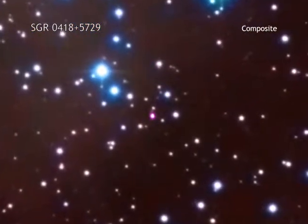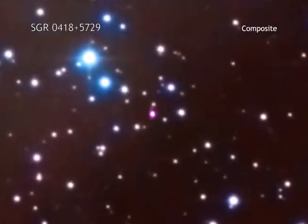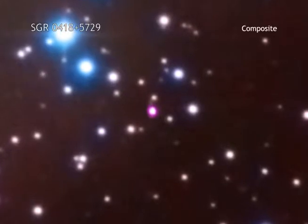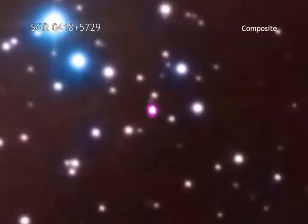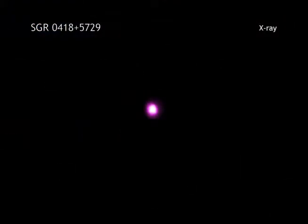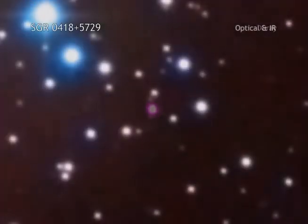Data from Chandra and several other x-ray observatories was used to make this measurement. The magnetar is seen as the pink source in the middle of this image, combining Chandra data with optical and infrared data.